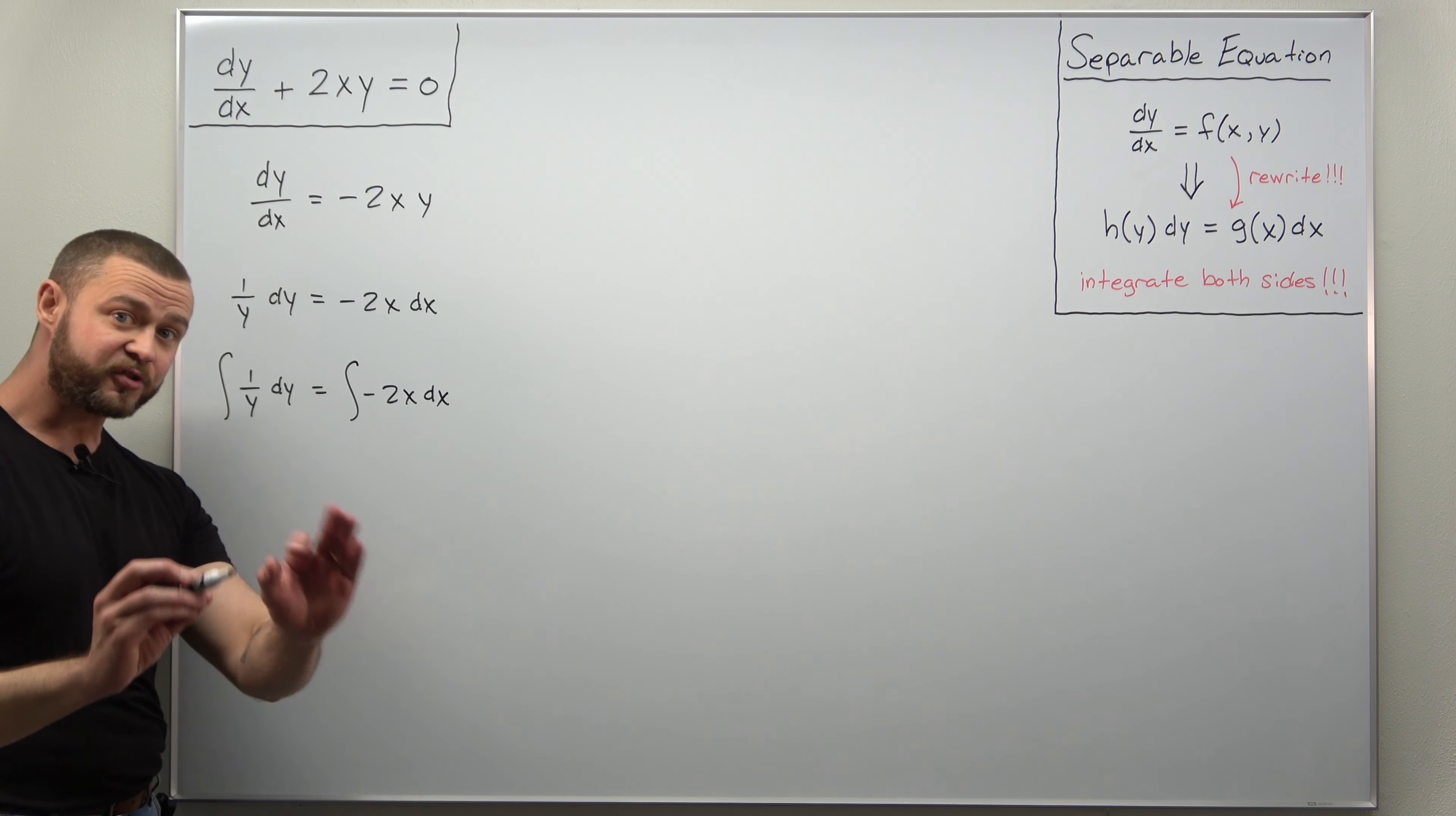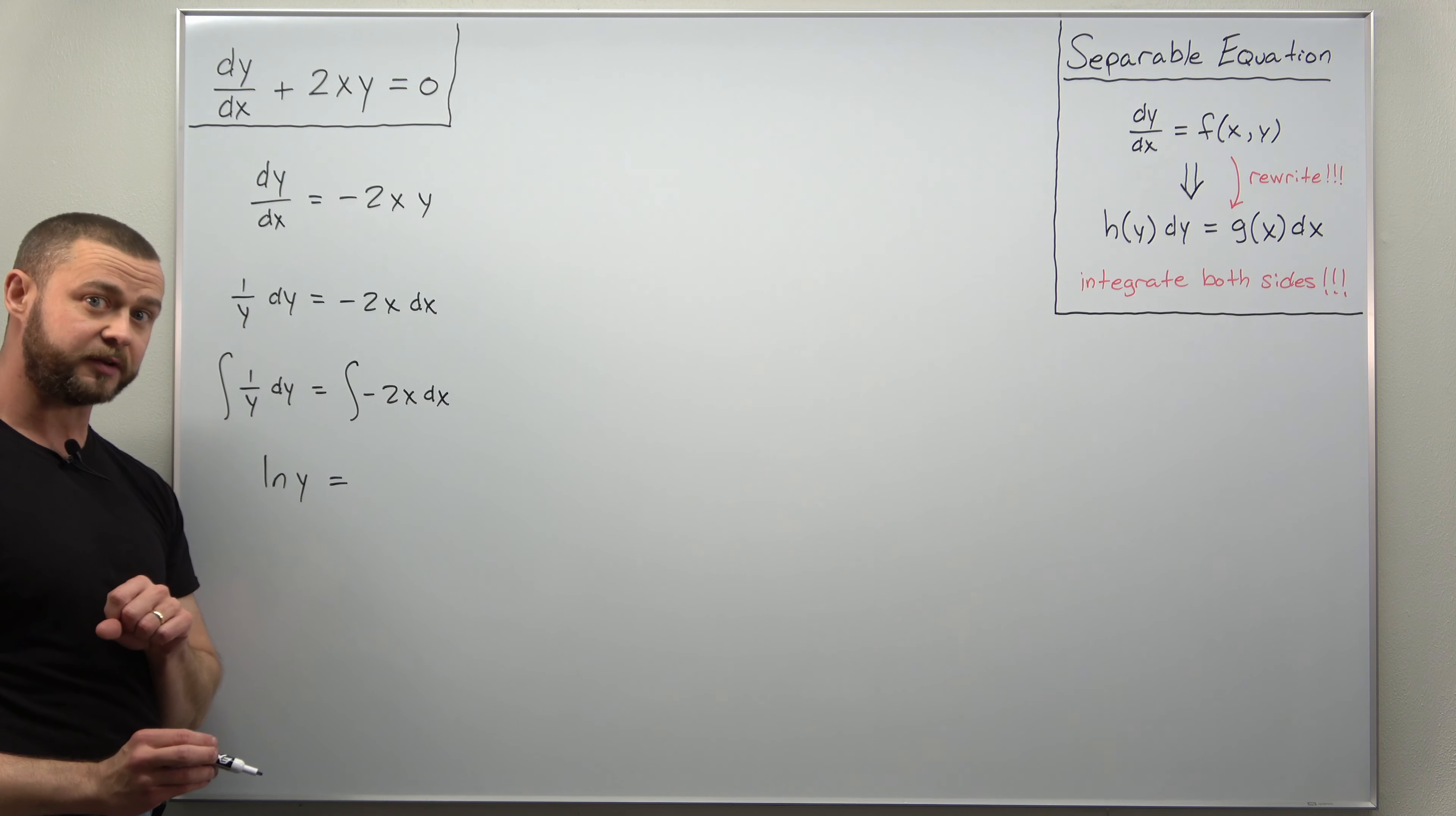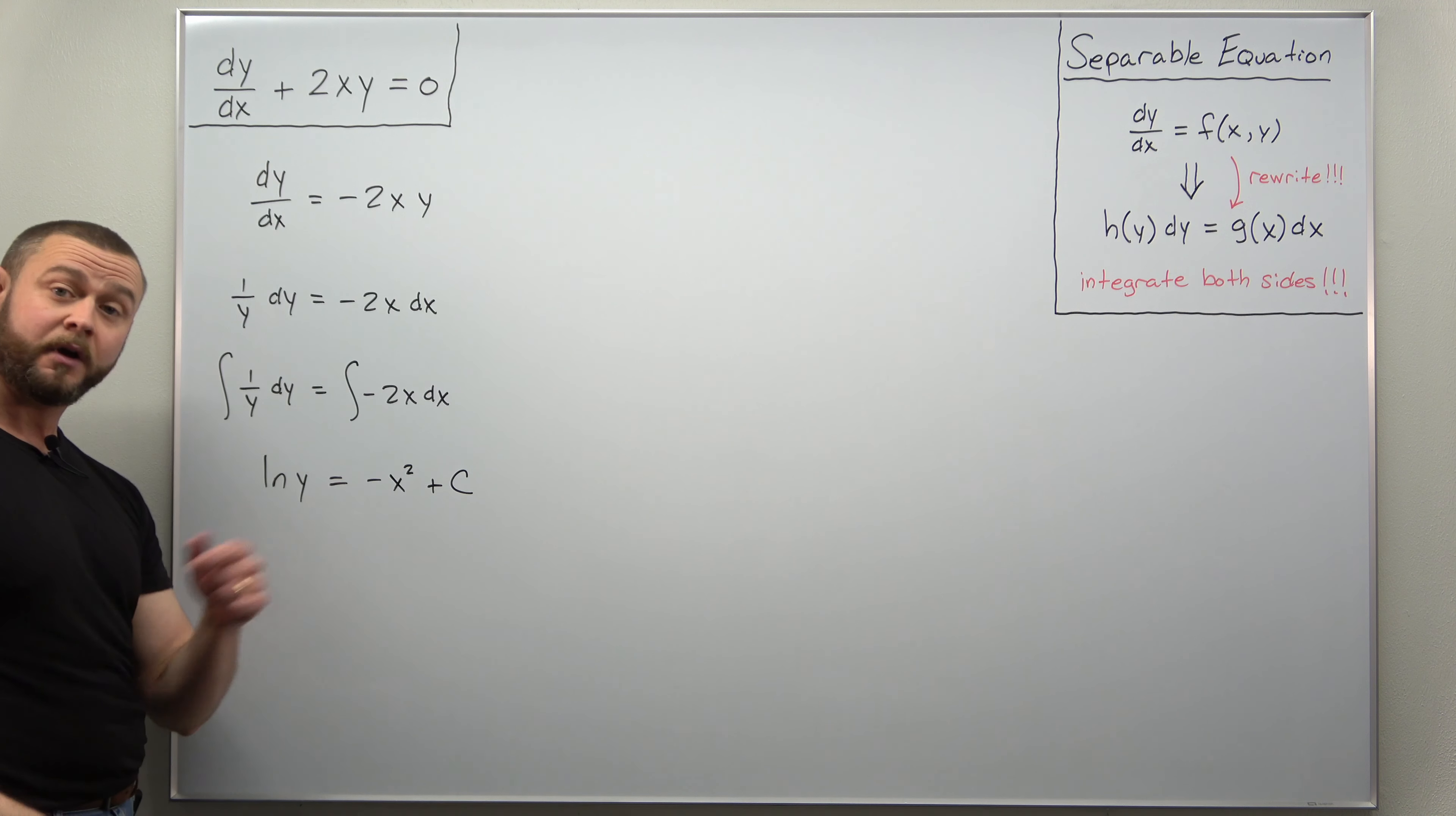Alright, and these antiderivatives are really simple. The left side is going to integrate to natural log of y. Worth pointing out, because you're integrating both sides you only need to include one integration constant and I always like to include that on the x side. So when we find your antiderivative of the right side with respect to x we'll get negative x squared and we'll include the integration constant c on that side.